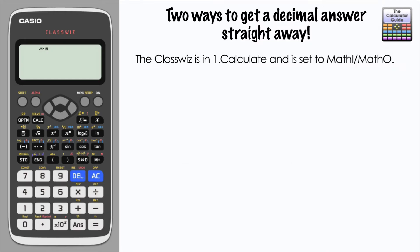I currently have the ClassWiz in calculate mode with the math input and output setup. This should give me an exact answer where possible when I press equals. For example, if I input 9 quarters and press equals, the calculator gives me that as an exact answer. As with previous generations of calculators, you could press SD at this point to get the decimal approximation.